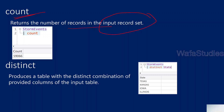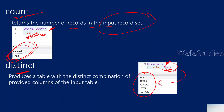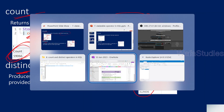When you talk about count, it returns the number of records in the input row set. Once you give a table and apply a count function on top of it, it gives you the number of records from that particular input table. Here StormEvents is the input table and I'm applying the count operator to get the number of records. When it comes to the distinct operator, it provides a new table with the distinct values of a given column. Here I use the State column on top of the StormEvents table, and it produces a new table with all the distinct values. Let me practically show you this in Kusto Explorer.